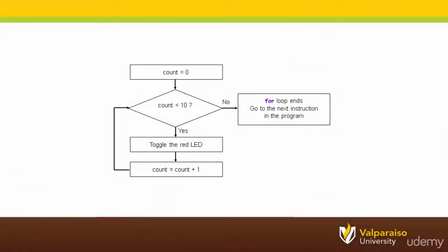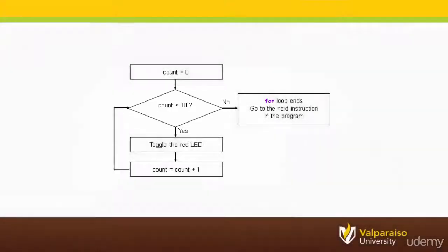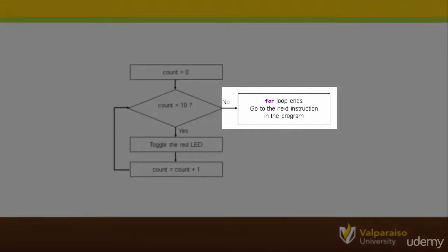Next, the for loop will test the control variable to see if it meets a specified condition. In this example, we test the control variable count to see if it is less than 10. If there ever is a time where the control variable does not meet the specified condition, for example, count is equal to 10, then the for loop is done and the program will move on to the next instruction.